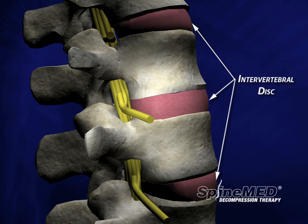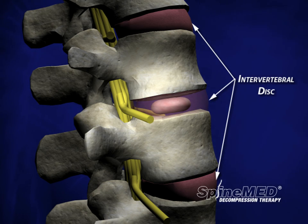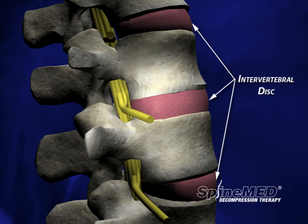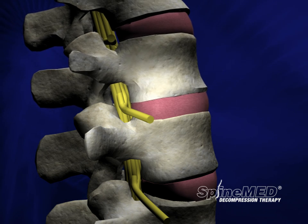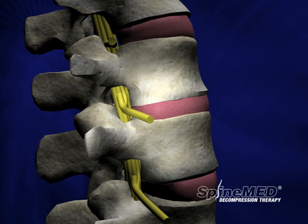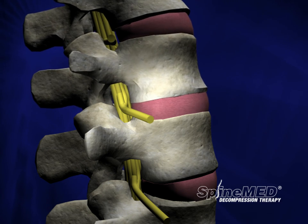Each vertebra in the spine is separated by an intervertebral disc. For simplicity's sake, the disc can be likened to a jelly donut. It has a soft, gel-like substance in the center called the nucleus propulsus, which is surrounded by a tough outer coating called the annulus fibrosus.